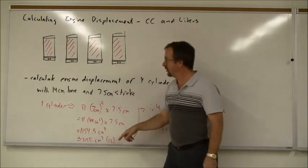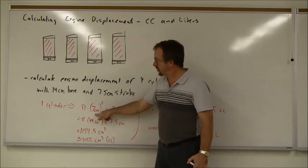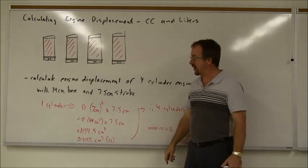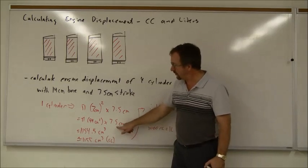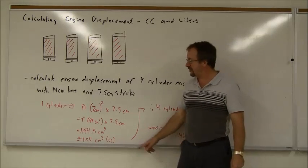So for one cylinder, I take the bore, divide it in two, square it, so 7-centimeter squared, then multiply it by the stroke, multiply it by pi. So that can be pi times 49 square centimeters times 7.5 centimeters. That gives me 1,154.5 cubic centimeters.